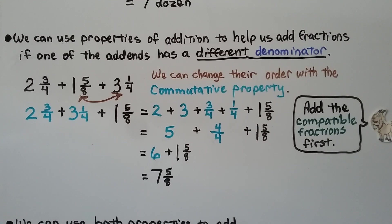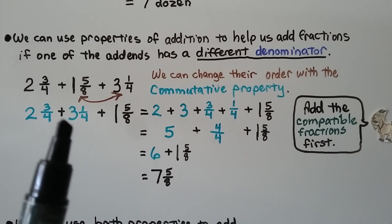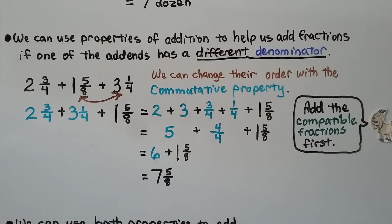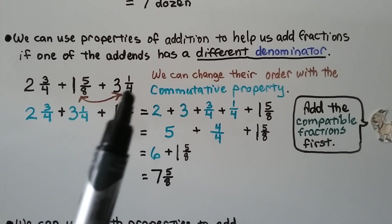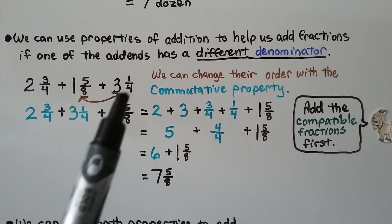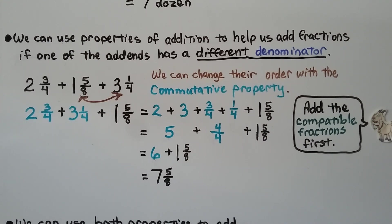To add fractions that have unlike denominators, we need to change the fractions to have the same denominator by finding equivalent fractions — you'll learn more about that in 5th grade. But when two fractions with the same denominator equal one whole, we don't have to worry about changing the denominator.